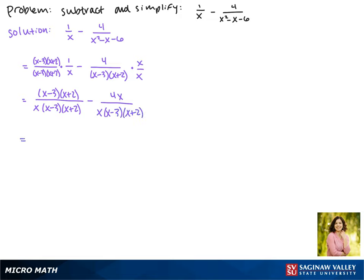So now we want to foil the binomials in the numerator. This gives us x squared minus x minus 6. We're going to leave the denominators factored. This will make it easier if we can cancel later. So the second term is going to stay the same.